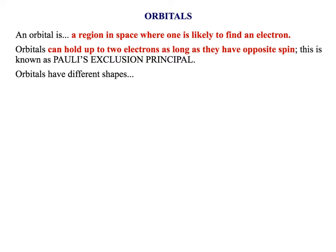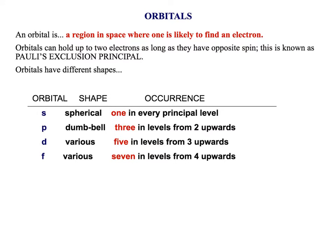Shells contain orbitals. An orbital is a region in space where one is likely to find an electron. Each orbital can hold 2 electrons and 2 electrons only, and only as long as they have opposite spin. The different subshells have different shapes.